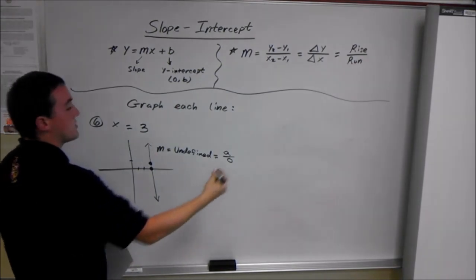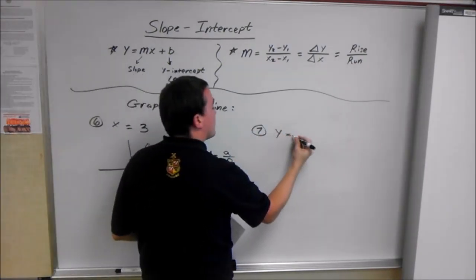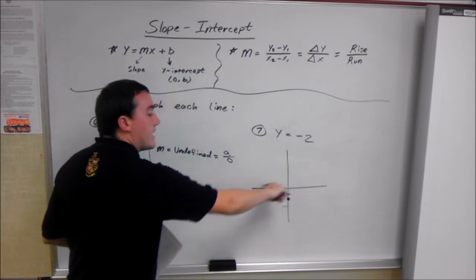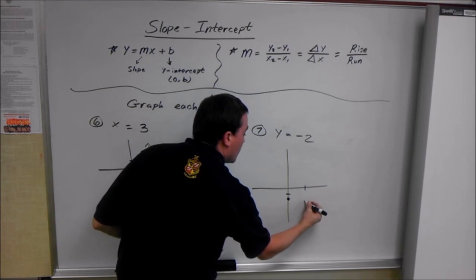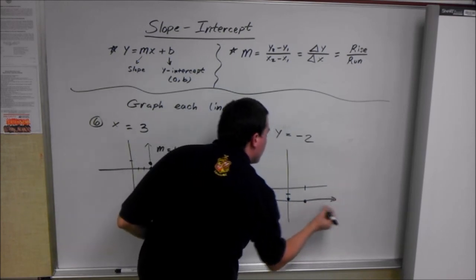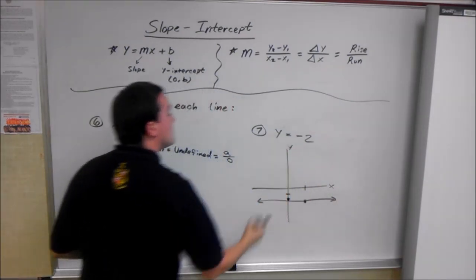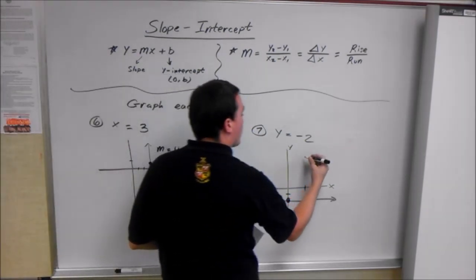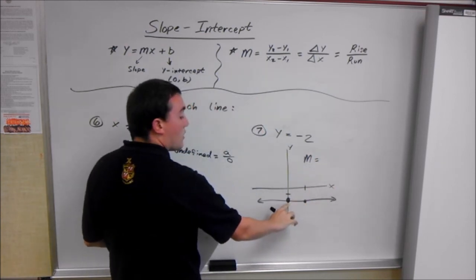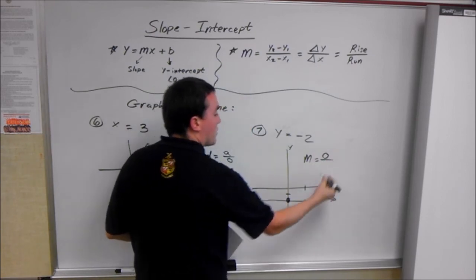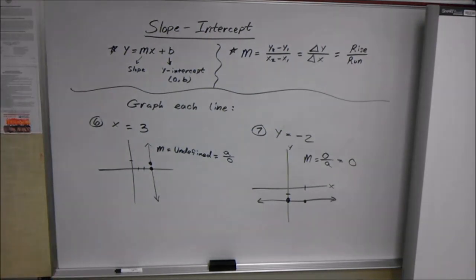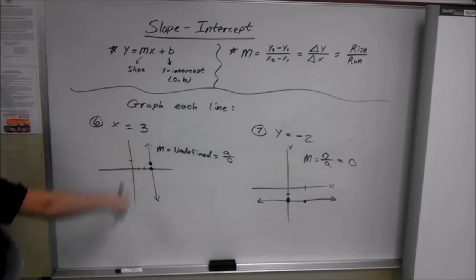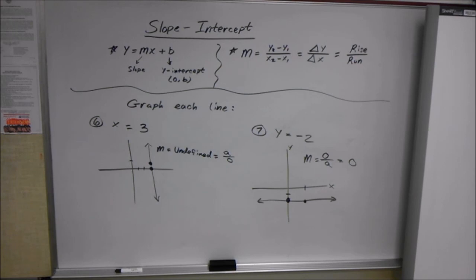It's similar with y equals a number. Number 7: y equals negative 2. Y equals negative 2 is a horizontal line — even at any x value, y is still going to be negative 2. The slope here is 0 over some number, which is 0. So: y equals a number gives a horizontal line with a slope of 0; x equals a number gives a vertical line with an undefined slope. And that's it for today.